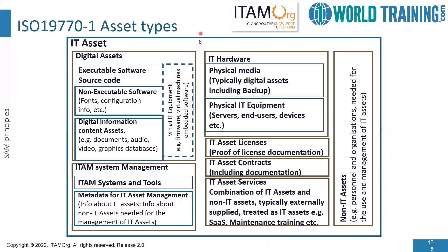There are various asset types under ISO 19770 Part 1. Under IT assets, we have digital assets. We have IT hardware, IT asset licenses, IT asset contracts, and IT asset services. Then we have IT asset system management, which includes the systems and tools used in ITAM, as well as metadata — meaning pointer data to other data — for IT asset management.